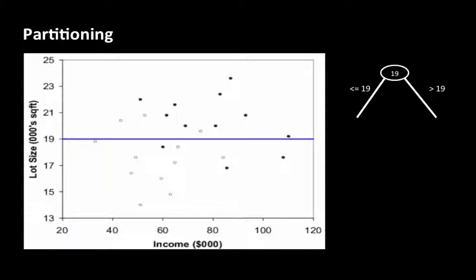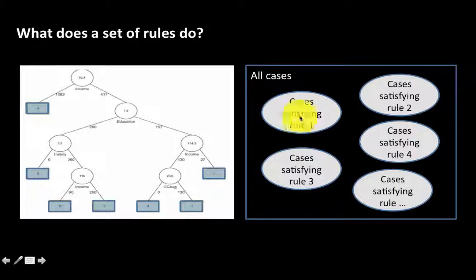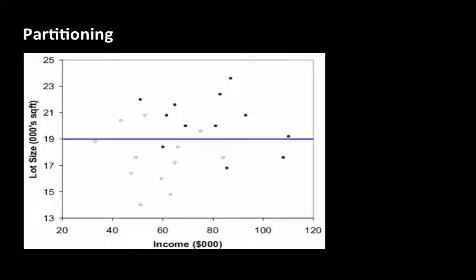What we are trying to do as a result of this partitioning is to have all cases satisfying each rule predominantly belong to just one class. It might not be possible to get all of them to consist of exactly one class, but we want them to be predominantly one class. Then you can say: if this rule is satisfied, classify as owner; if that rule is satisfied, classify as non-owner. The idea is to create sets of cases which are close to being pure — consisting of only one type of case.